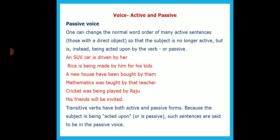Let us look at the first passive sentence: 'An SUV car is driven by her.' We are more interested in which car is driven, and the person is not that important because we already know she drives. 'Rice is being made by him for his kids' — we are curious about what is being made and how. Here the subject is not so important; the verb form, the aspect of the verb, and the object are important.